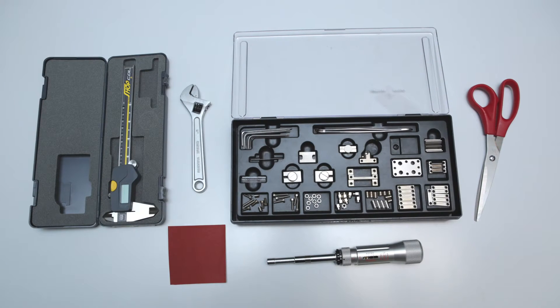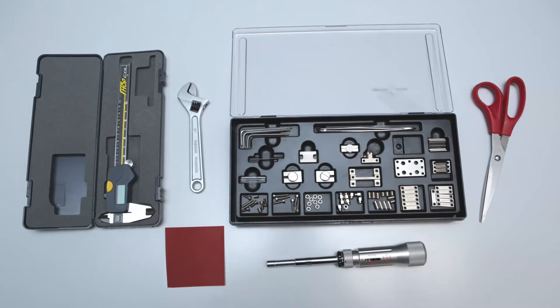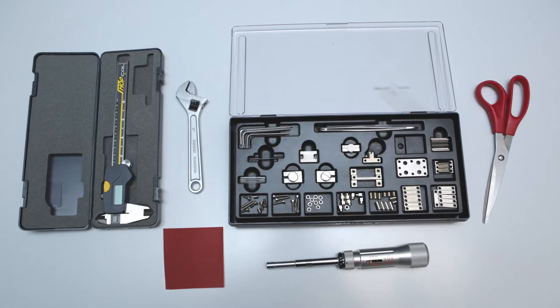The sample holders, clamps, clamping tools, and screws are stored in an accessory box that comes with a DMA.